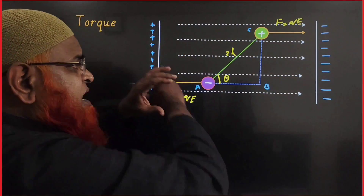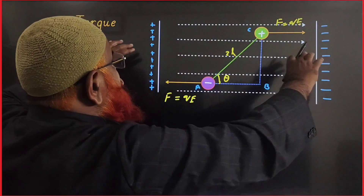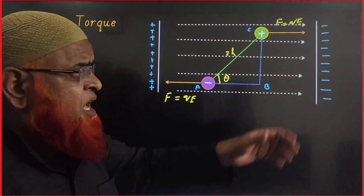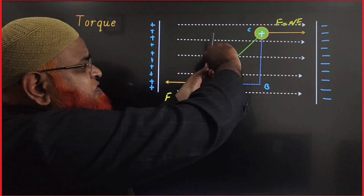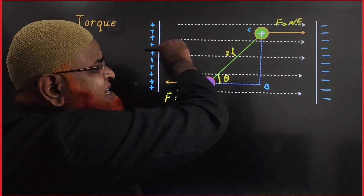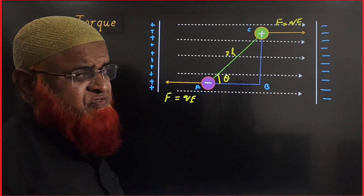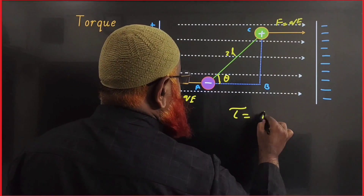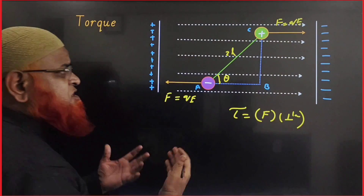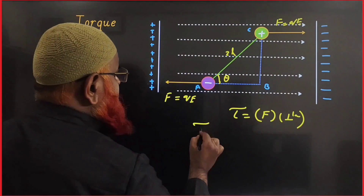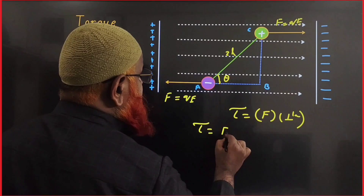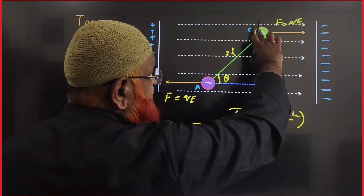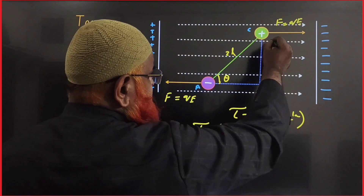This torque will turn the electric dipole and align it along the direction of the electric field — even if you keep the dipole at an angle, after some time it gets aligned along the electric field. Torque is nothing but force into perpendicular distance. In this case, torque τ is equal to force into the perpendicular distance BC.